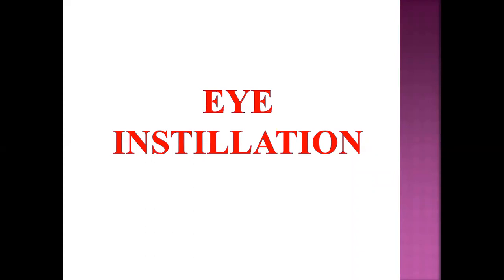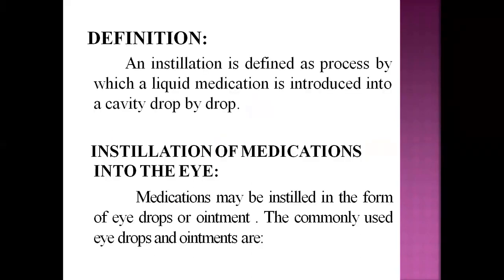Hello students, today we will start a new topic that is eye instillation. Installation means when we introduce or instill a medication into the eye, that is called as the eye instillation procedure. The definition of eye instillation is defined as the process by which a liquid medication is introduced into a cavity drop by drop. When a patient has any infection or eye disorder, the ophthalmologist prescribes some medication as a drop, and applying it drop by drop is called instillation.